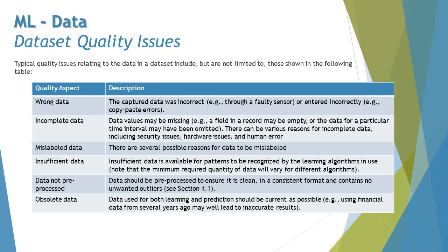Incomplete data — data values may be missing, meaning a field in a record may be empty or data for a particular time interval may have been omitted. There can be various reasons for incomplete data including security issues, hardware issues, and human error. Some fields contain personal identification information that cannot be captured or is restricted from retrieval.